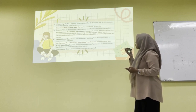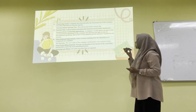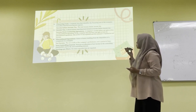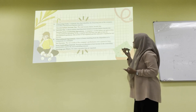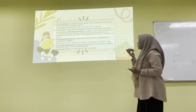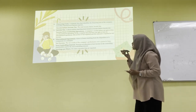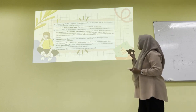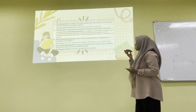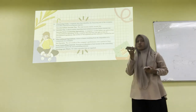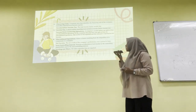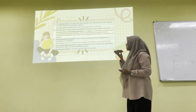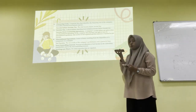Seventh is income from continuing operations — a company's result before any gain or loss on discontinued operations. If the company doesn't have any gain or loss on discontinued operations, this section is not reported. Eighth is discontinued operations: gains or losses resulting from the disposition of a component of a company. Finally, net income is the net result of performance over a period of time, followed by non-controlling interest and earnings per share.